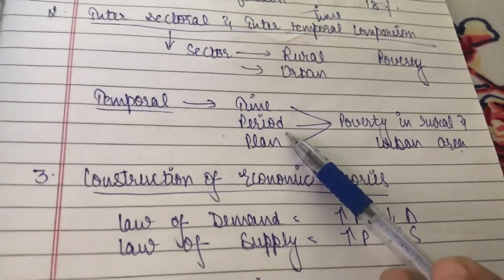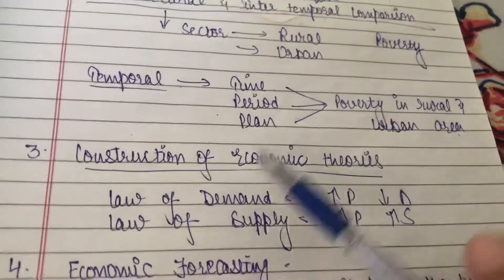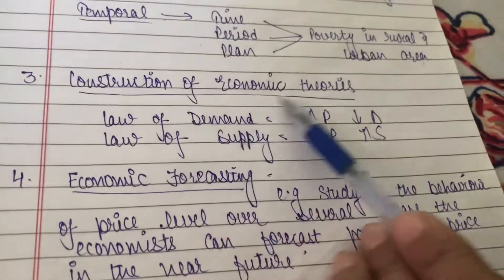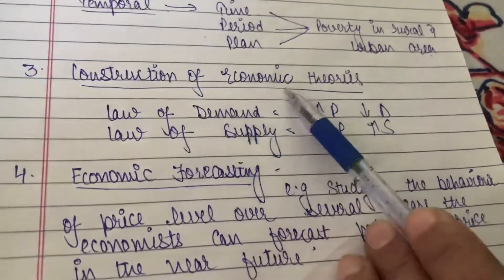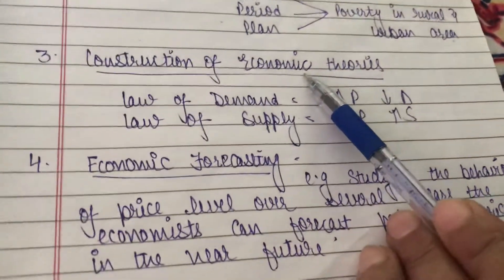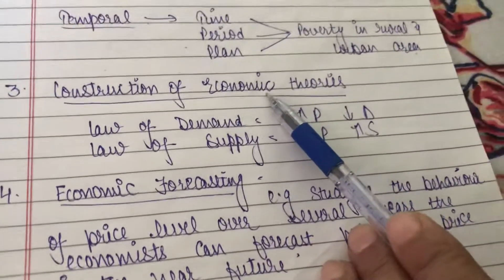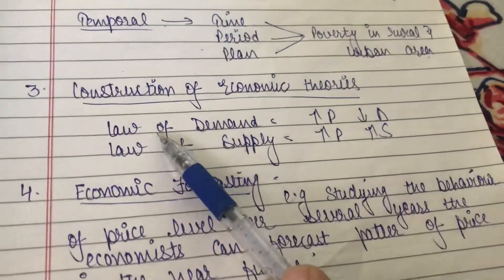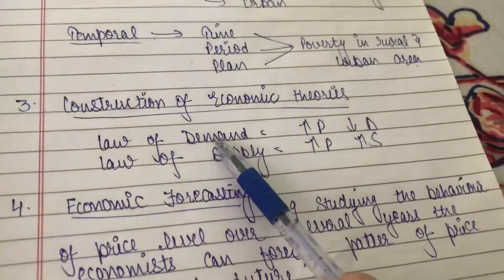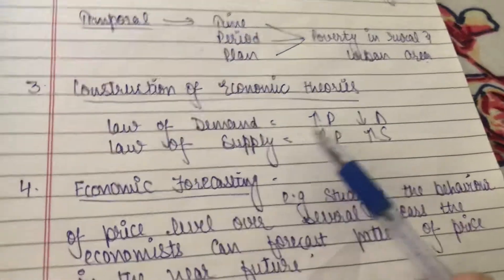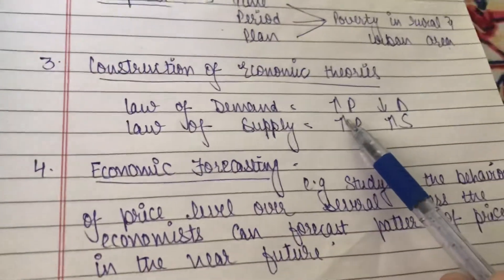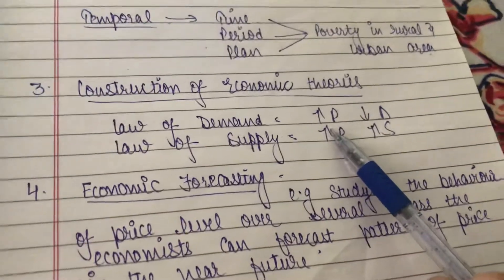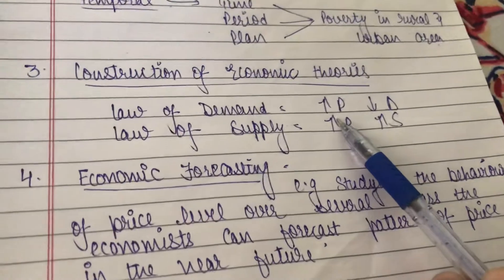The next importance is construction of economic theories. You are going to study economic theories later, but here just understand it in simple terms. The law of demand says that when prices increase — think about yourself as a consumer — what do we generally do? We decrease our demand.